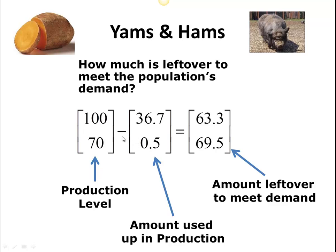That represents how much yams was used up in order to produce these 100 yams. So if you take the difference of these two numbers — what we produce and how much is used up in production — what we have is the amount that's left over. And this amount that's left over is what we can use to meet the demand, the external demand of our economy, or we can go out and sell it to villages next door.